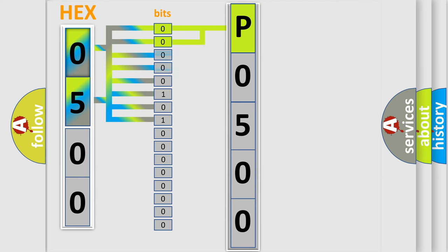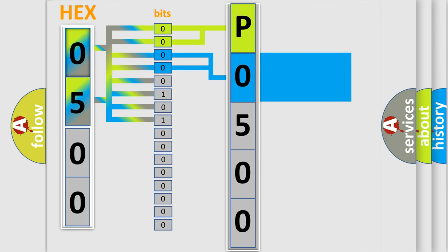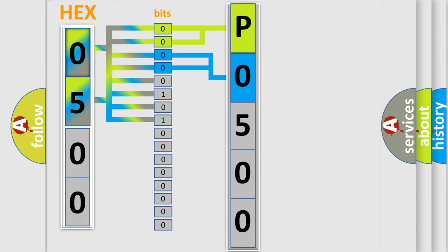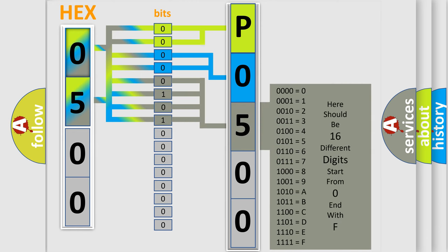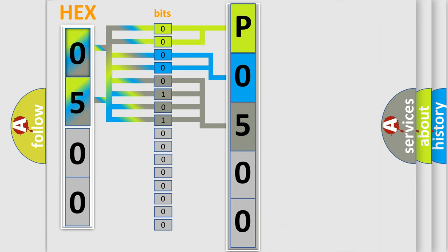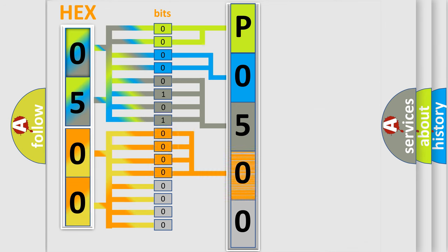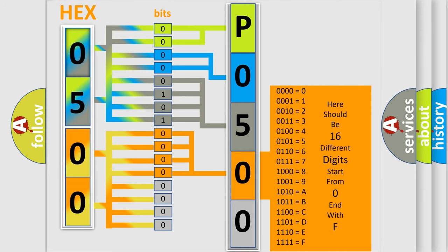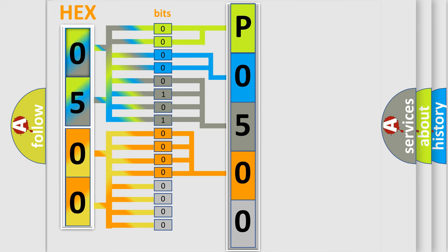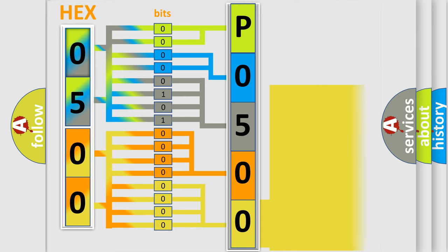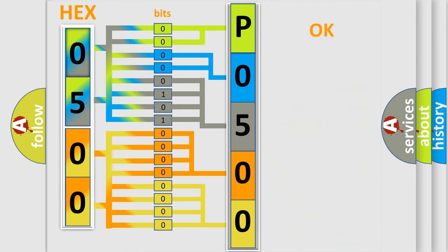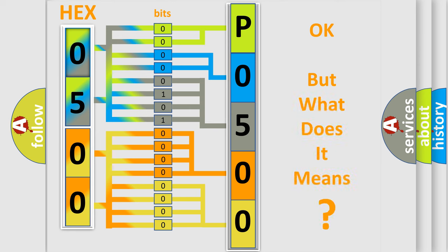The next two bits determine the second character. The last bits of the first byte define the third character of the code. The second byte is composed of a combination of eight bits. The first four bits determine the fourth character, and the combination of the last four bits defines the fifth character. A single byte conceals 256 possible combinations. This is how the diagnostic tool translates the received information into a more comprehensible format.